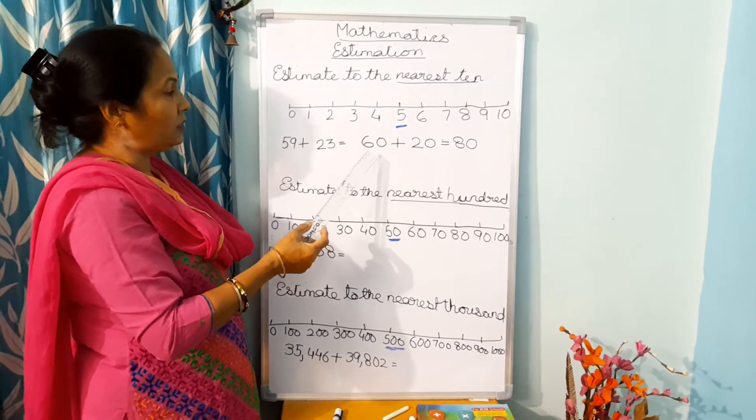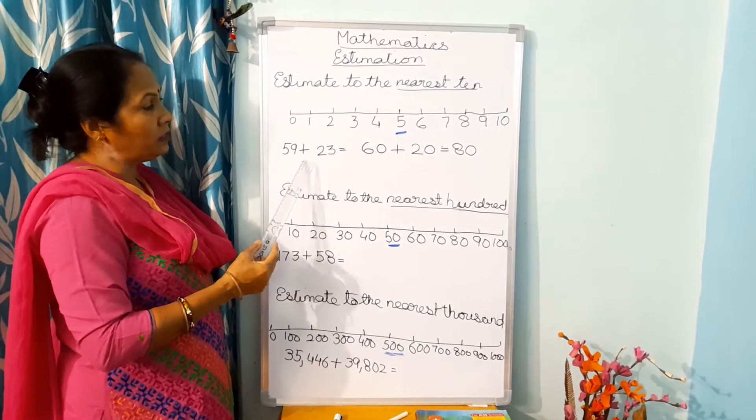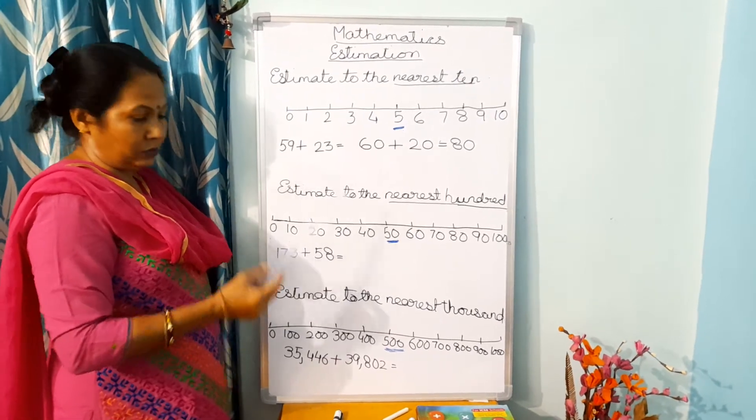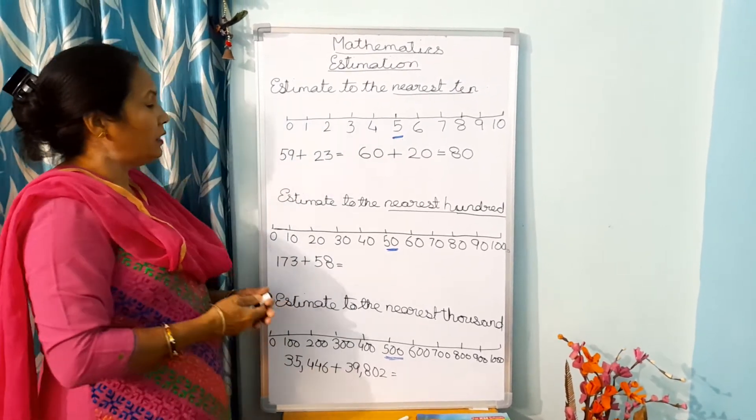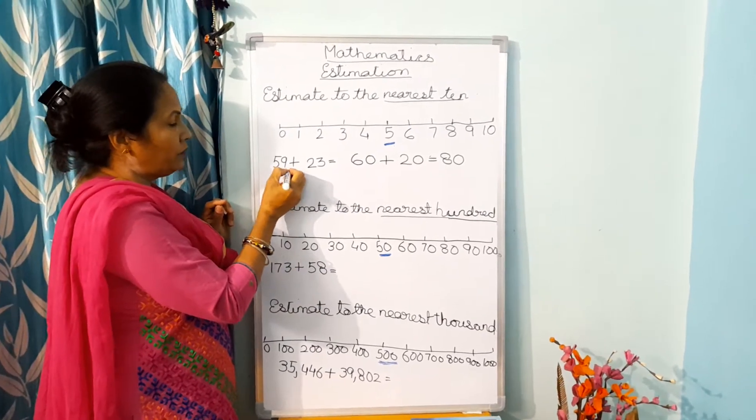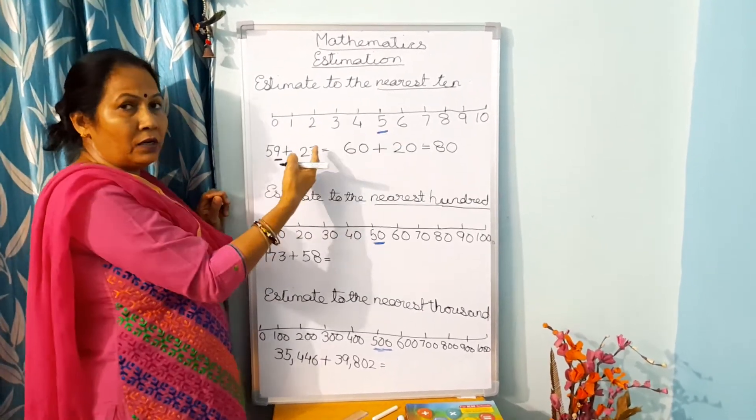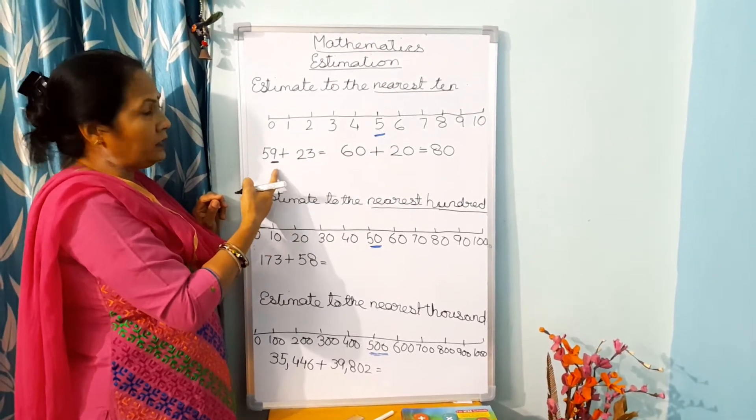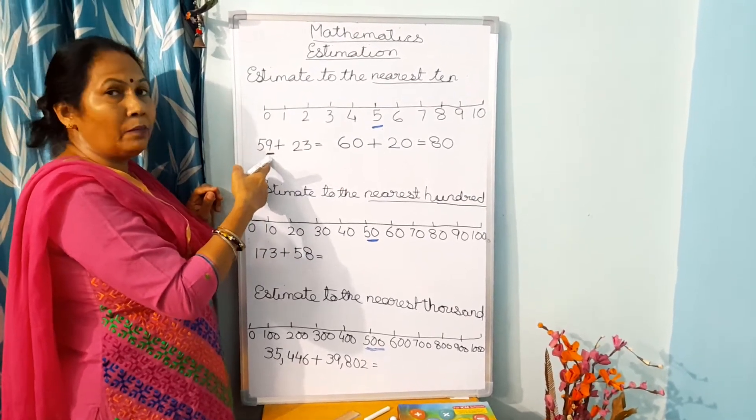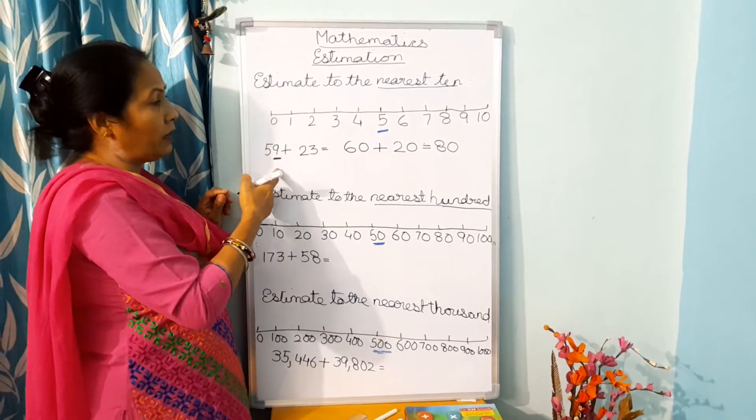Means you will see that here you have 59 plus 23. Now for 59, you are going to take the number in the 1's place and you will see whether it is greater than 5 or smaller than 5. 9 is greater than 5, so this will become 10. Why? Because you are estimating it. So this will become 10, and you will write here 10 plus 50 is equal to 60.